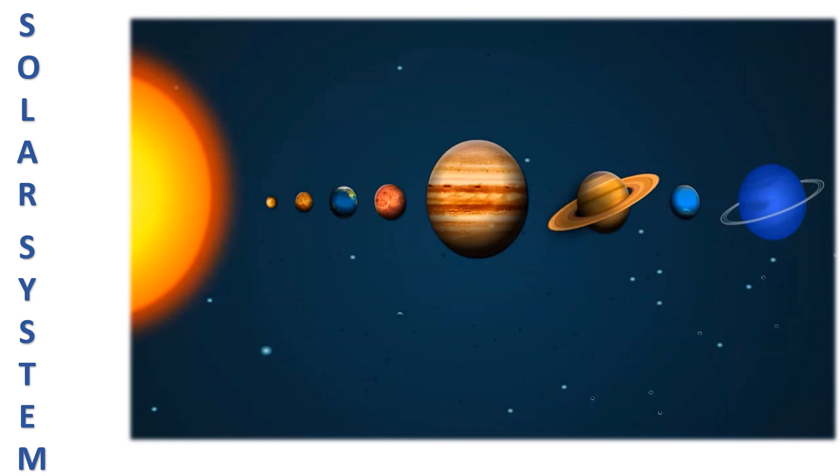Planets. The word planet means a wanderer. The eight planets around the sun in the order of increasing distance from the sun are Mercury, Venus, Earth, Mars, Jupiter, Saturn, Uranus and Neptune.